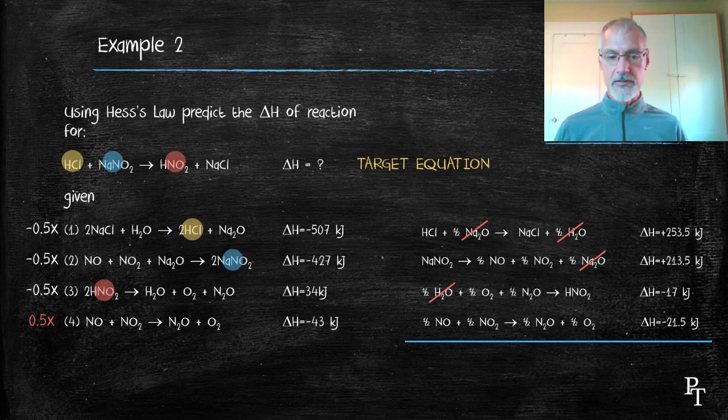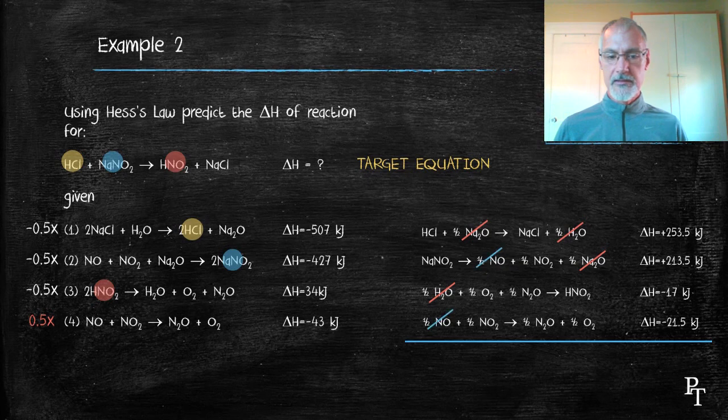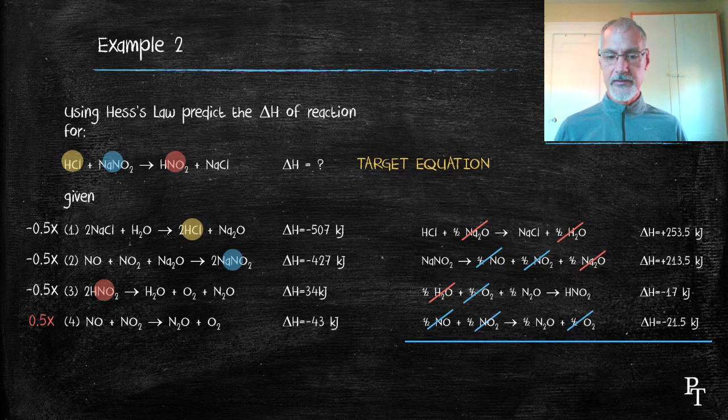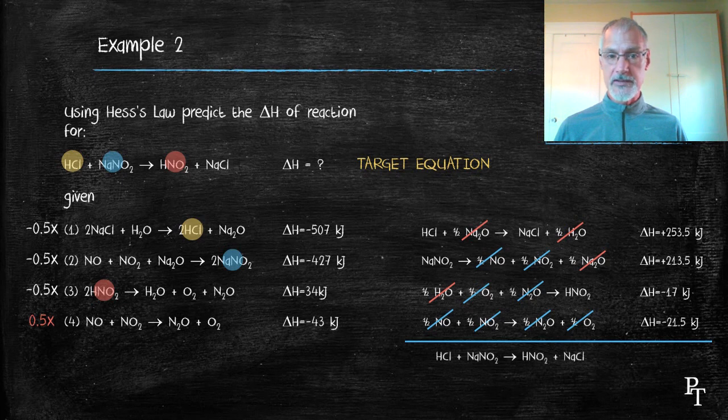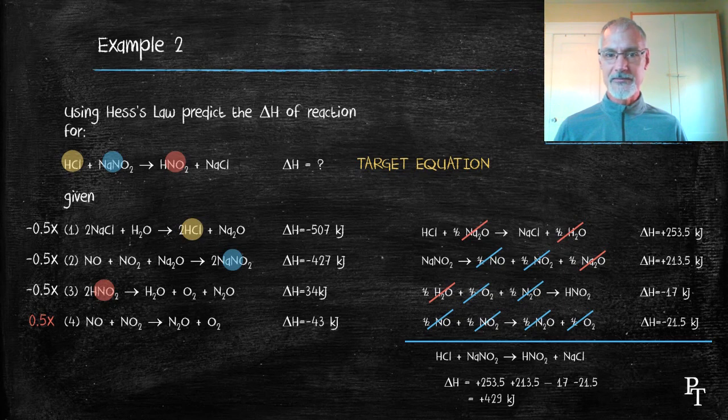So there I've got rid of the nitrogen monoxide, nitrogen dioxide, my oxygen gas, and my dinitrogen oxide. Now when I add up the equation, I do arrive at my target. So as a result, I can add together their enthalpy changes and get the overall enthalpy change for this reaction.